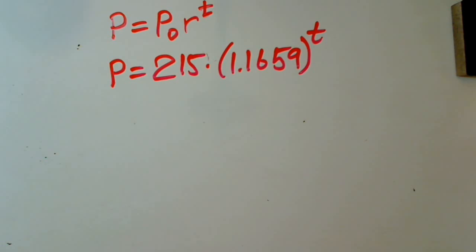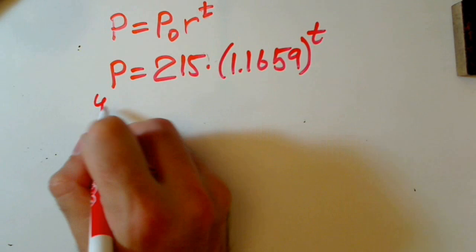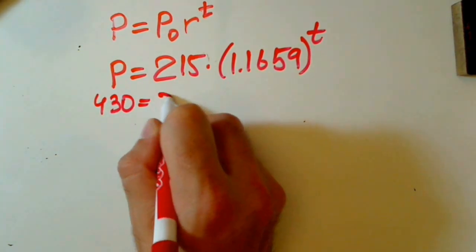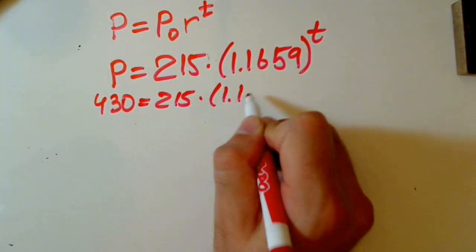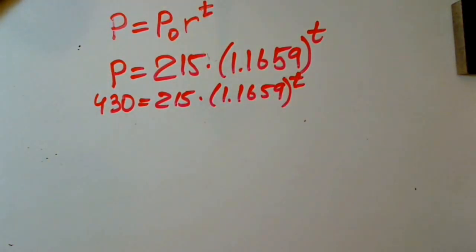First question was how to find doubling time for the population of bacteria. And what we do, we just double our initial population, which is 430, goes to 215 times 1.1659, raised to T.